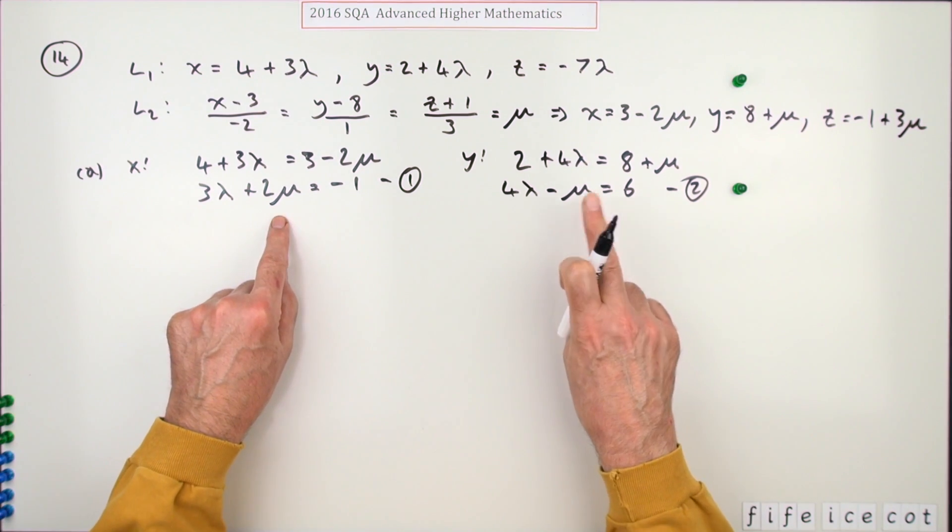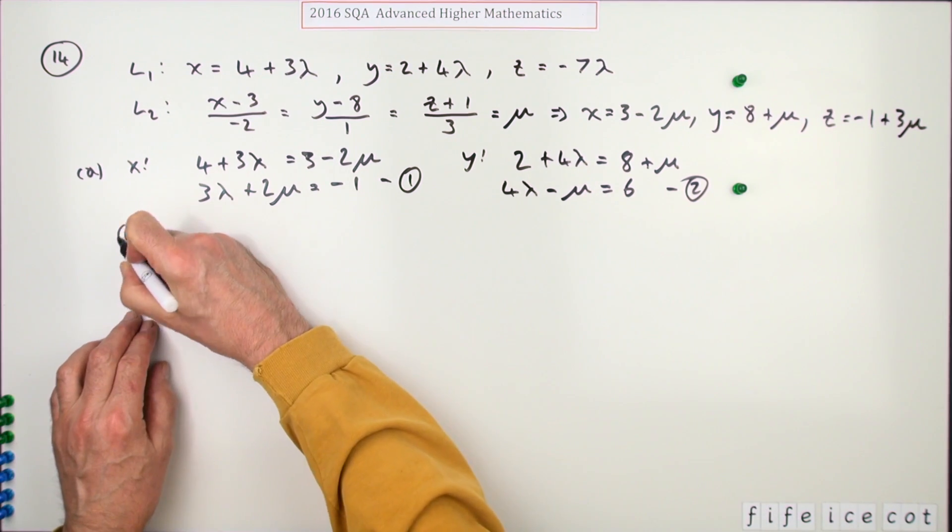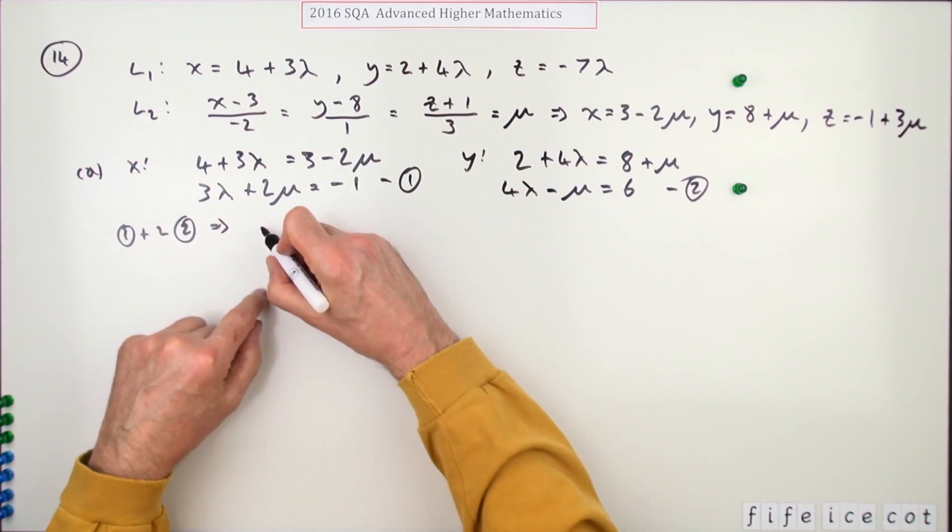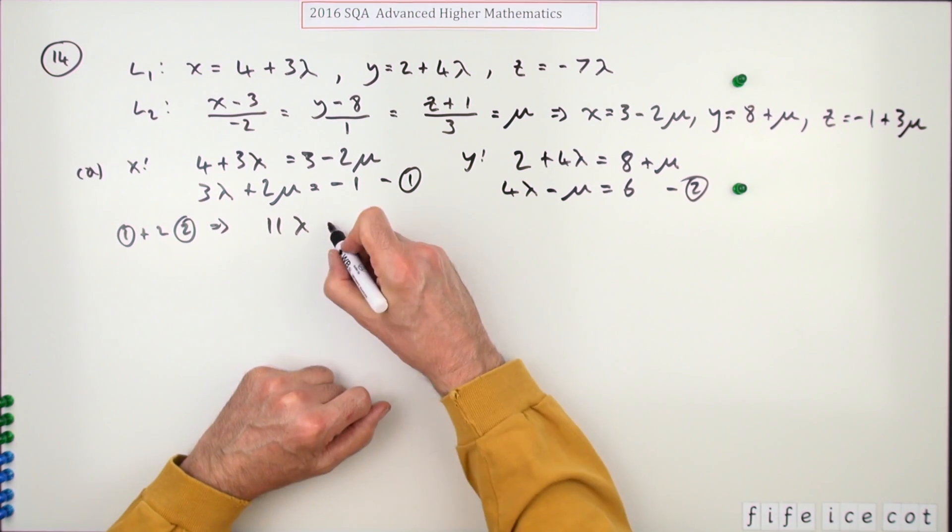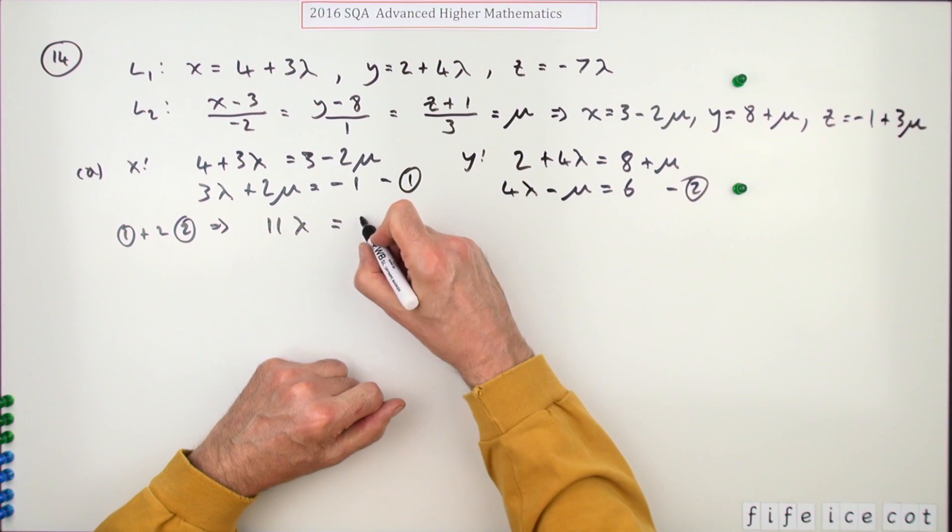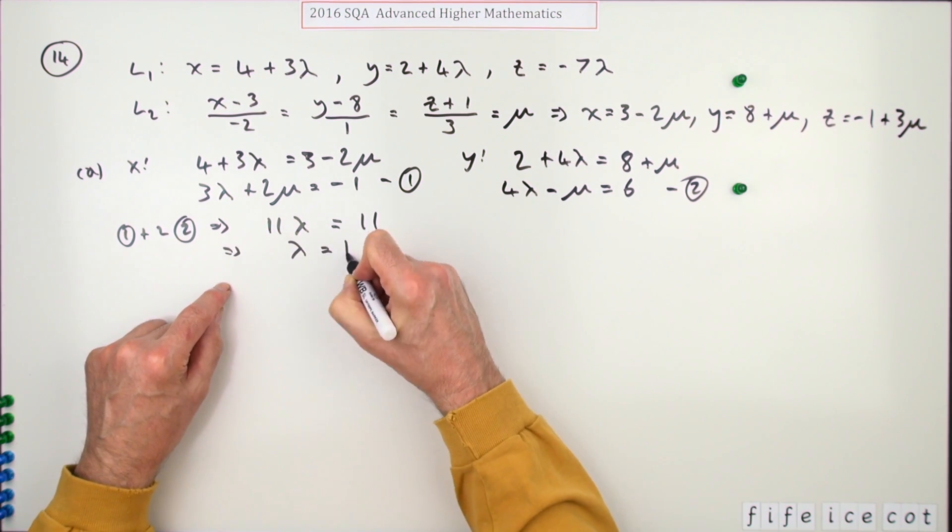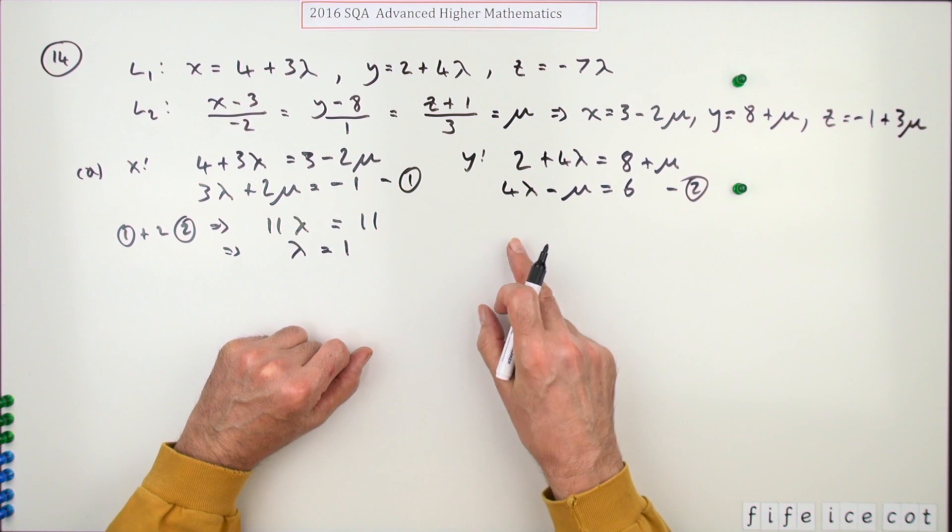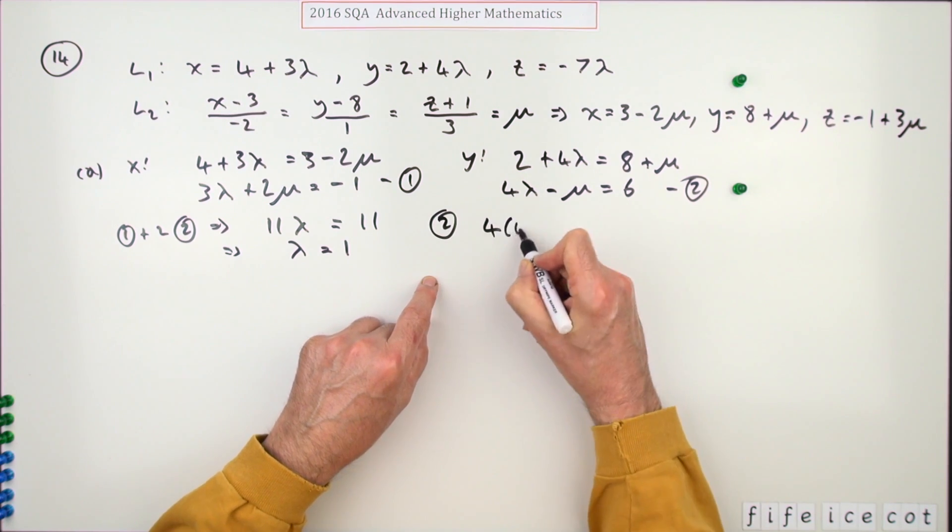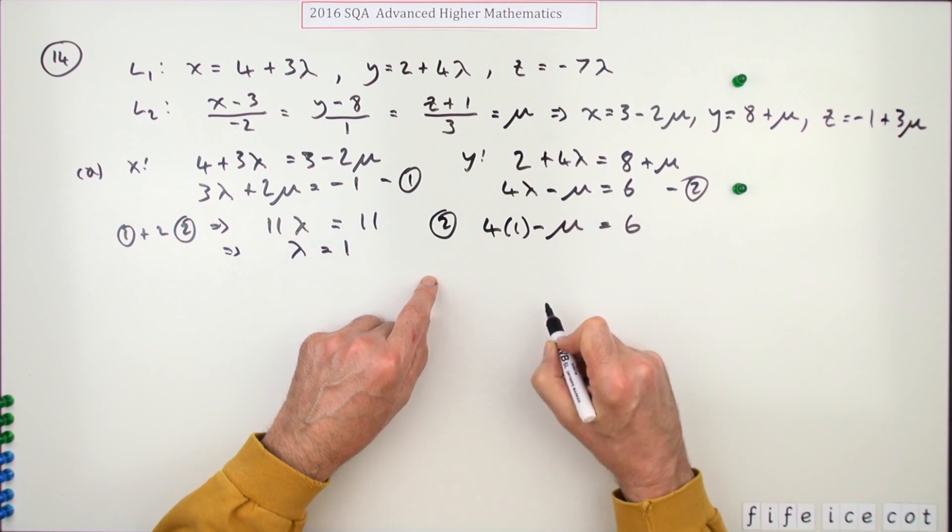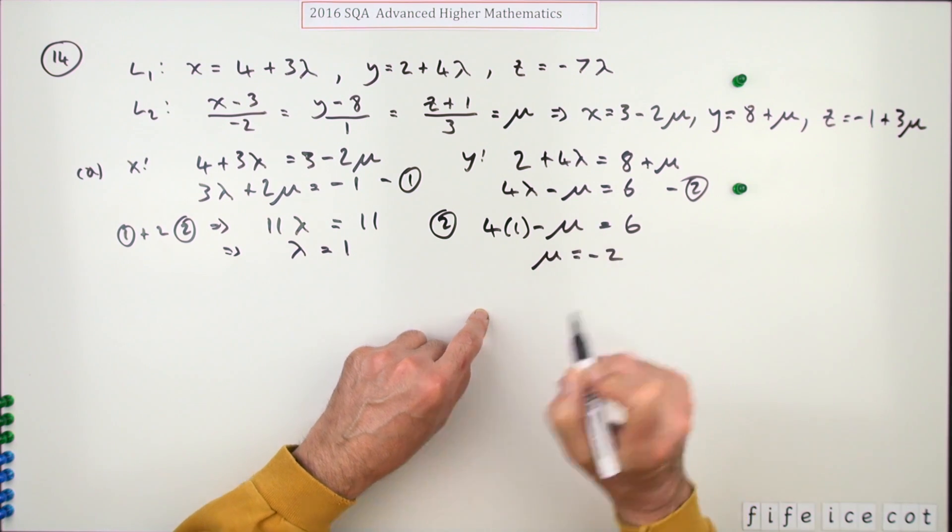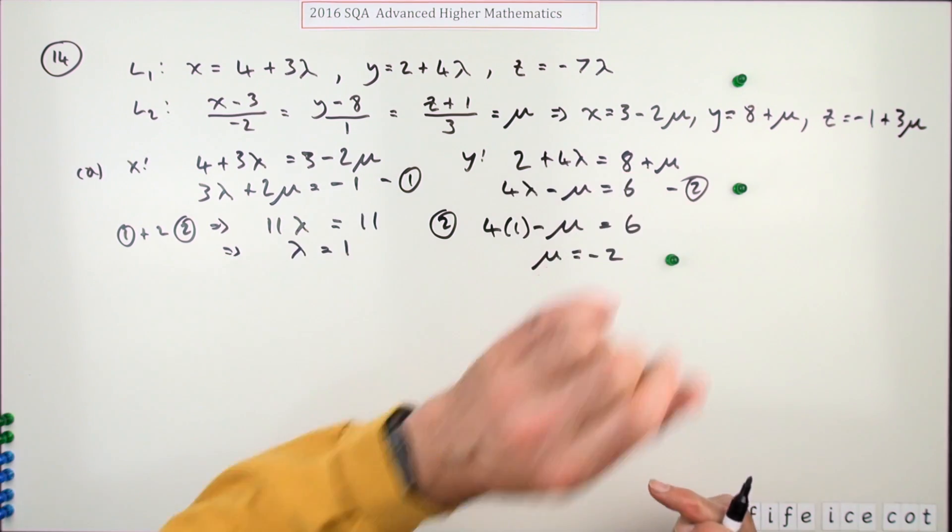Now solve it. You can get rid of mu by doubling this equation and adding it. 1 plus 2 lots of 2 gives you 3 plus 8 is 11 lambda, which equals negative 1 plus 12, which is 11. So lambda equals 1. Once you've got lambda, you can find mu from either of them. Using number 2: 4 times 1 minus mu is 6, so 4 take away mu equals 6, which means mu equals negative 2. Doing that gets you the third mark.